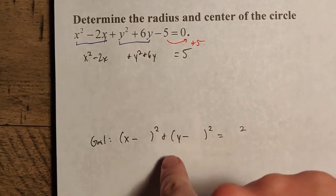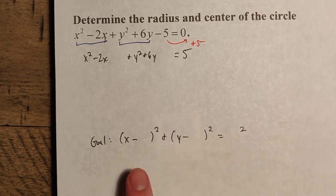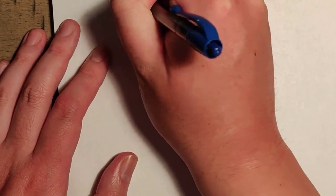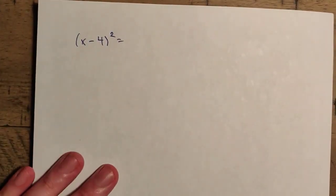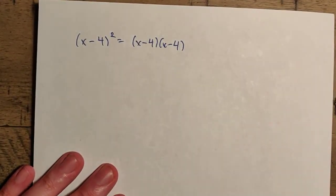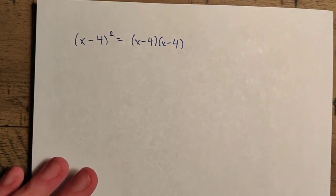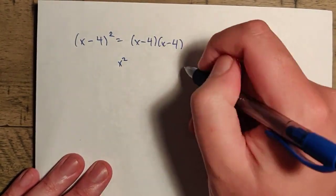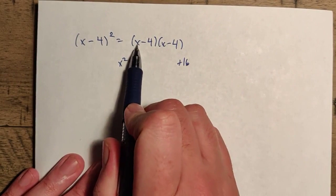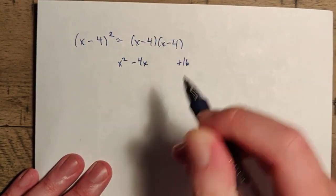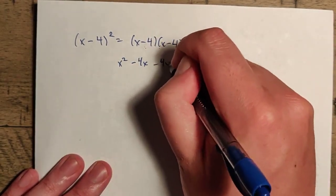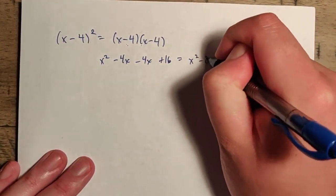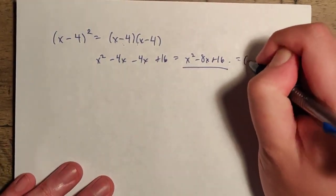As you recall from algebra 1, if we do something like (x - 4)², that's really (x - 4)(x - 4). Please do not say it's just x² + 16 — there are things missing. If we distribute, x times x gives x², x times -4 gives -4x, -4 times x gives another -4x, and -4 times -4 gives +16. That yields x² - 8x + 16, which equals (x - 4)².